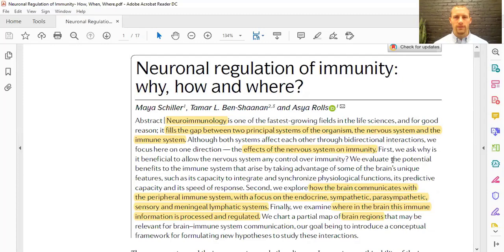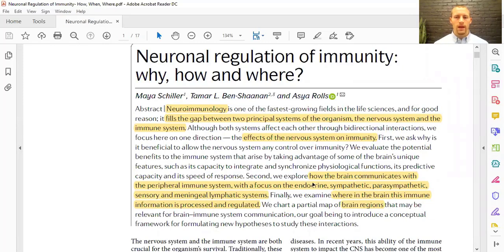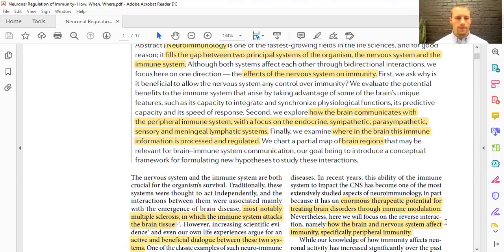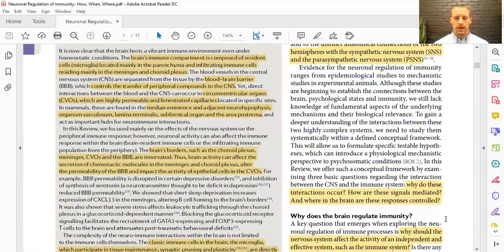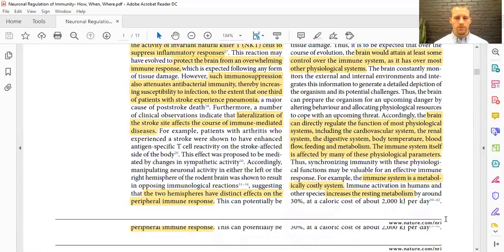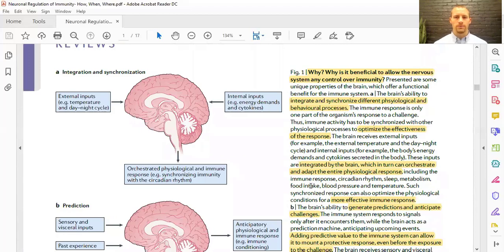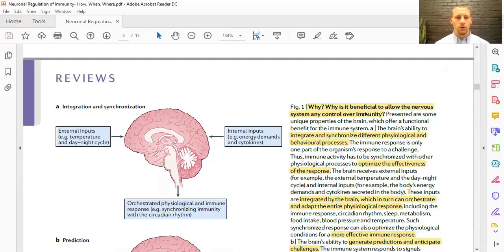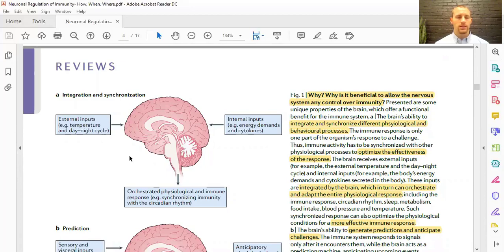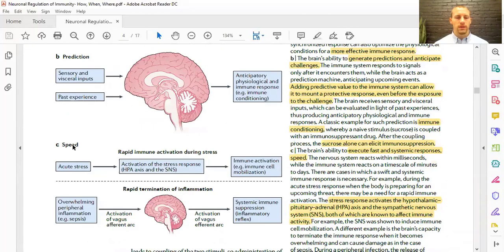They're asking why does it affect immunity, how does that brain communication affect the immune system, and where in the brain. Let's walk through it. Figure one is why is it beneficial to allow the nervous system to control immunity. There are basically three things they propose: integration and synchronization, prediction, and speed.